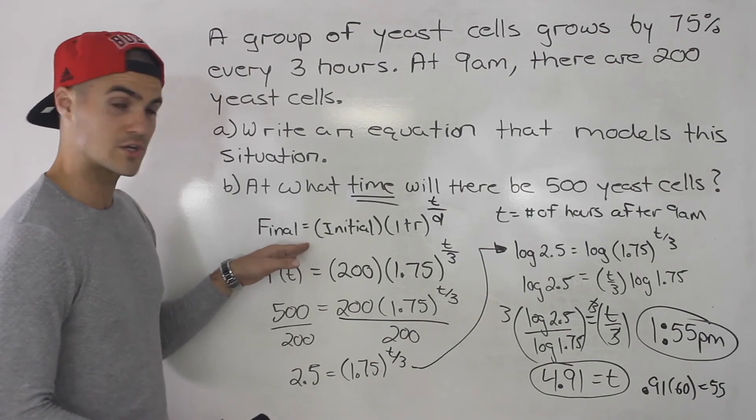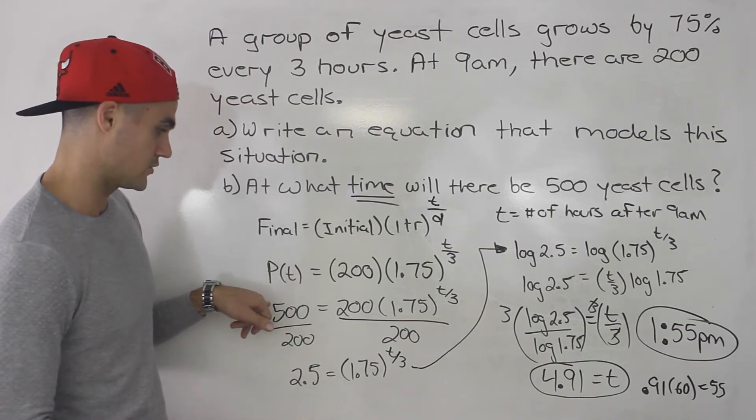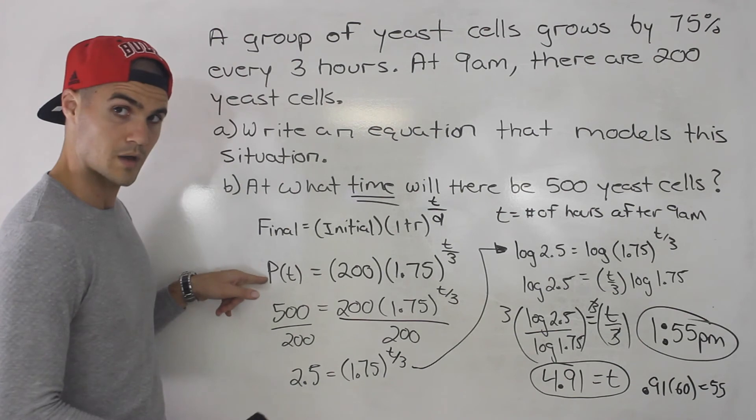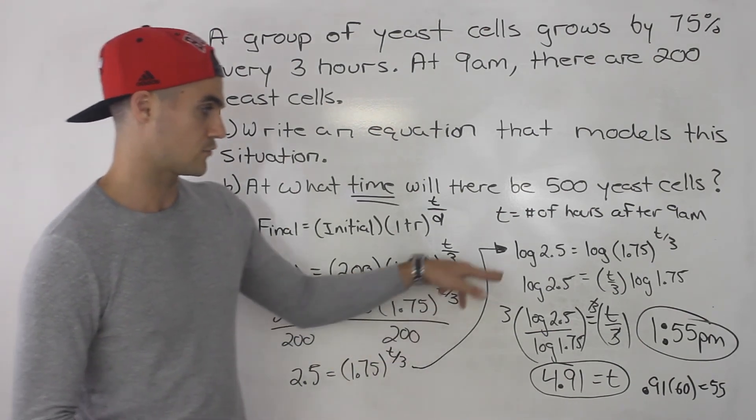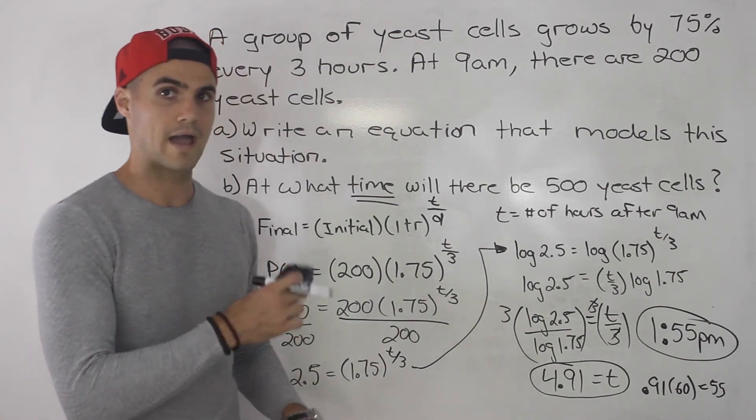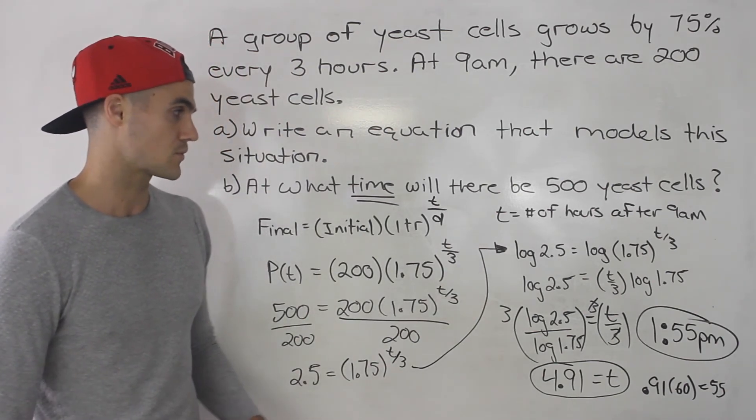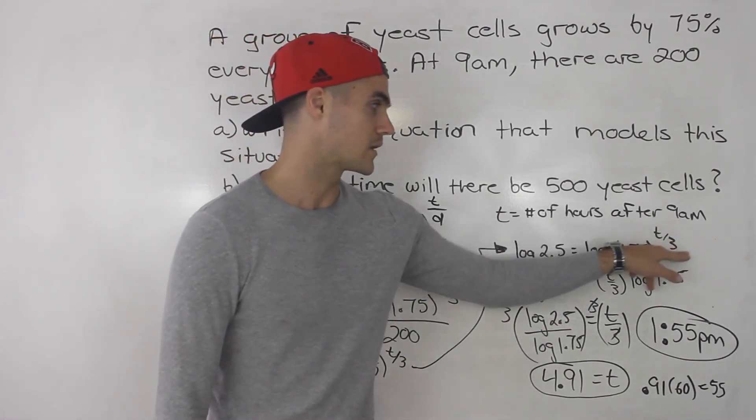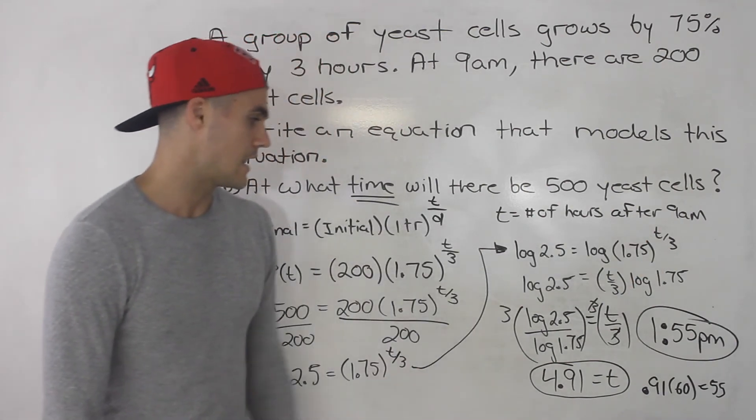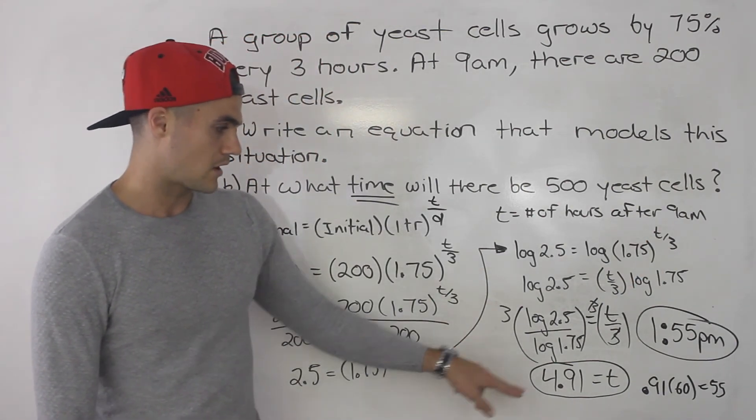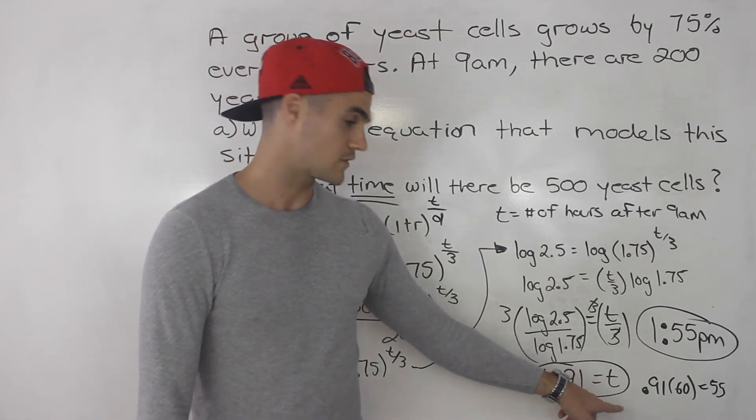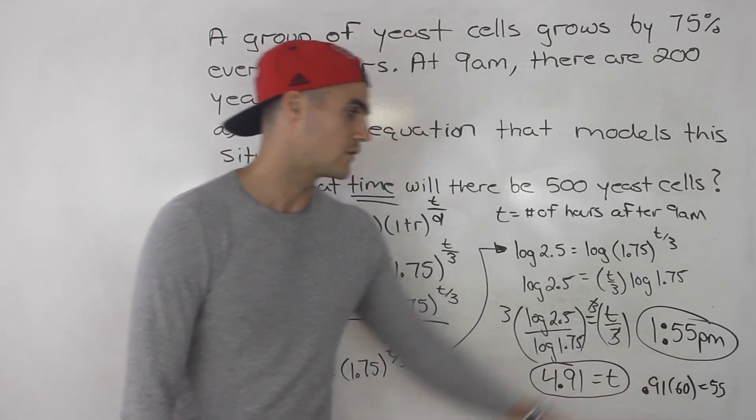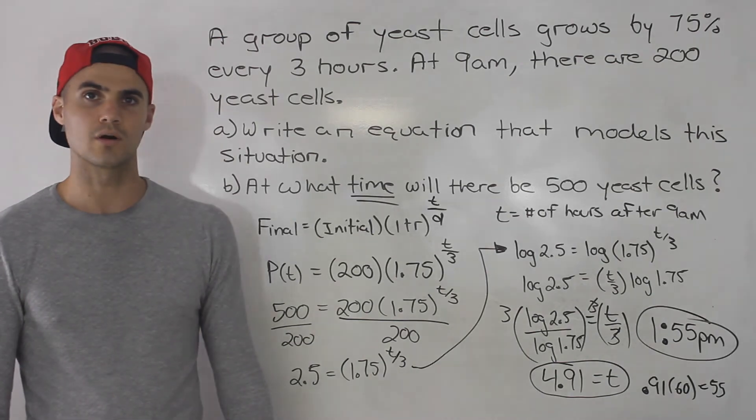So you make your equation, that's part a. Plug in 500 for the final population, then you solve for t. Just be careful with these logarithms. You may want to go back and review the lecture videos where we solve for t variables. Do all that, and remember you've got to convert that decimal to minutes. If they're asking for the time, multiply it by 60. 1:55 p.m., that's the answer for part b.